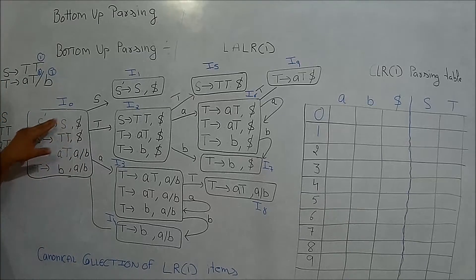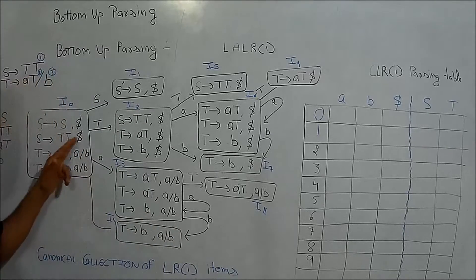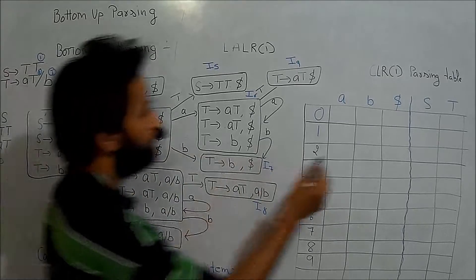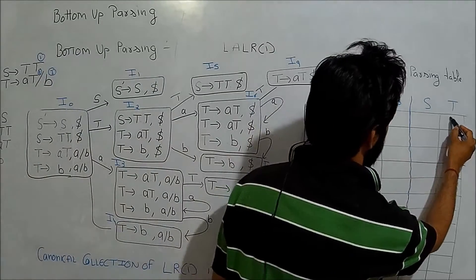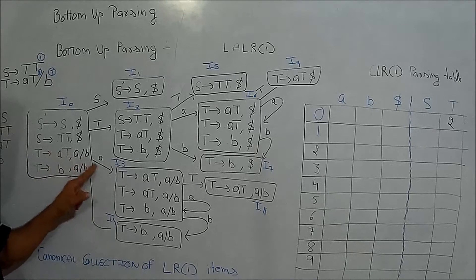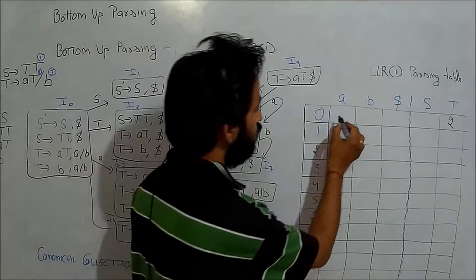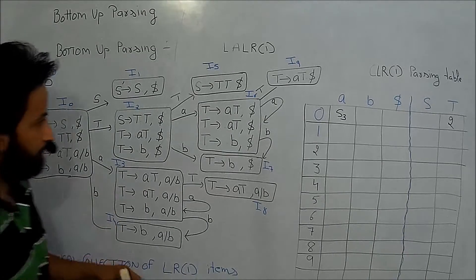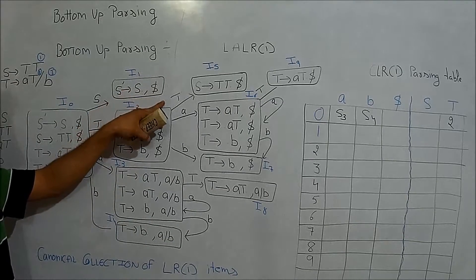Starting with state i0: taking S will go to state 1 — I won't mention this since it is the augmented production used only for acceptance. Taking T will go to state 2, which is a goto table entry. For the action table, passing dot to a shifts to state 3 — so I write shift 3 under a. Similarly for b, the shift move goes to state 4.